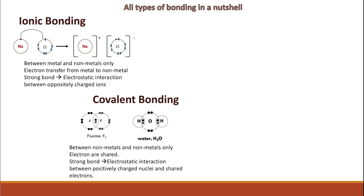Covalent bonding is the next type, found between non-metals only — so it has to be between non-metal and non-metal — where electrons are not gained or lost, but shared between the two atoms. This is how we draw the dot and cross diagram for covalent bonding. These are strong bonds because the strength comes from the strong electrostatic interaction between the positively charged nuclei of the two elements and the shared electrons.